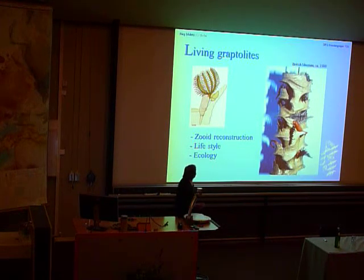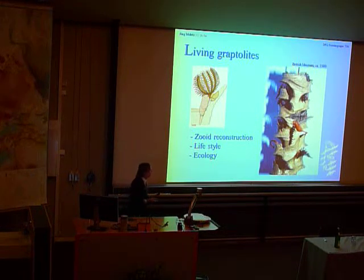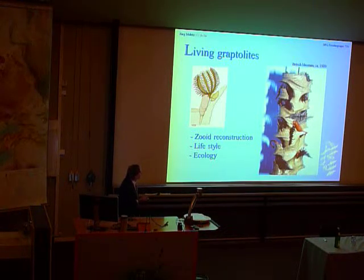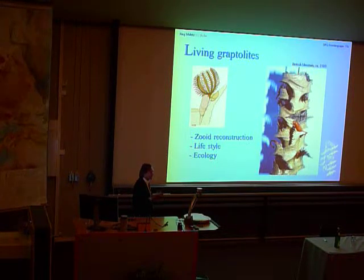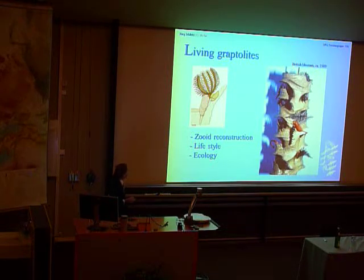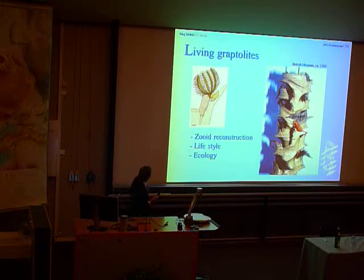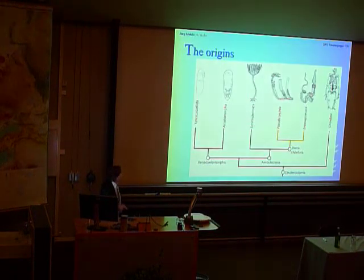So why is it so good to have living graptolites? Well, having living graptolites — Rhabdopleura — means we can reconstruct the graptolite colony, we can put in the zooids, hopefully as they looked. We don't have any credible record of fossil zooids, which is not surprising — they are soft-bodied organisms one or two millimetres in length, so it's difficult to fossilize. But we can now reconstruct them better, we can now understand better their lifestyle and their ecology. Quite some improvement that we've made that way.